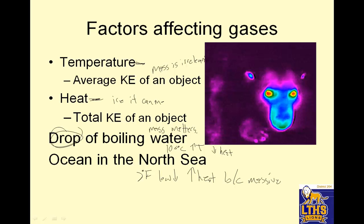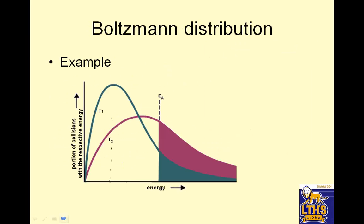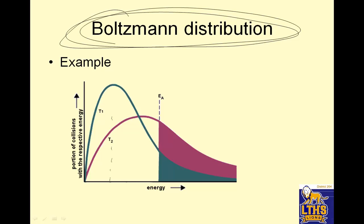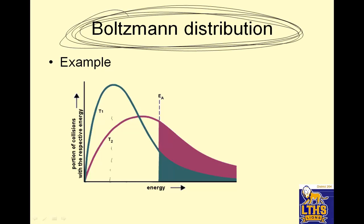I like to think of heat as how much ice it can melt. If it has a lot of heat, it can melt a lot of ice. A drop of boiling water can't even melt a whole ice cube. The Boltzmann distribution is a new focus of the AP exam, meaning your tests too.